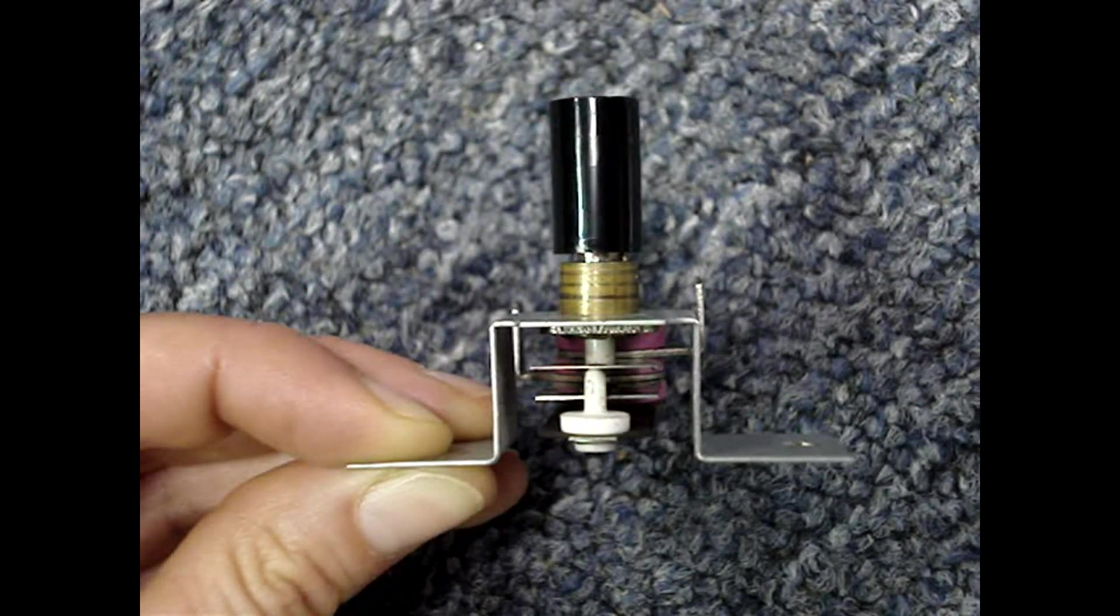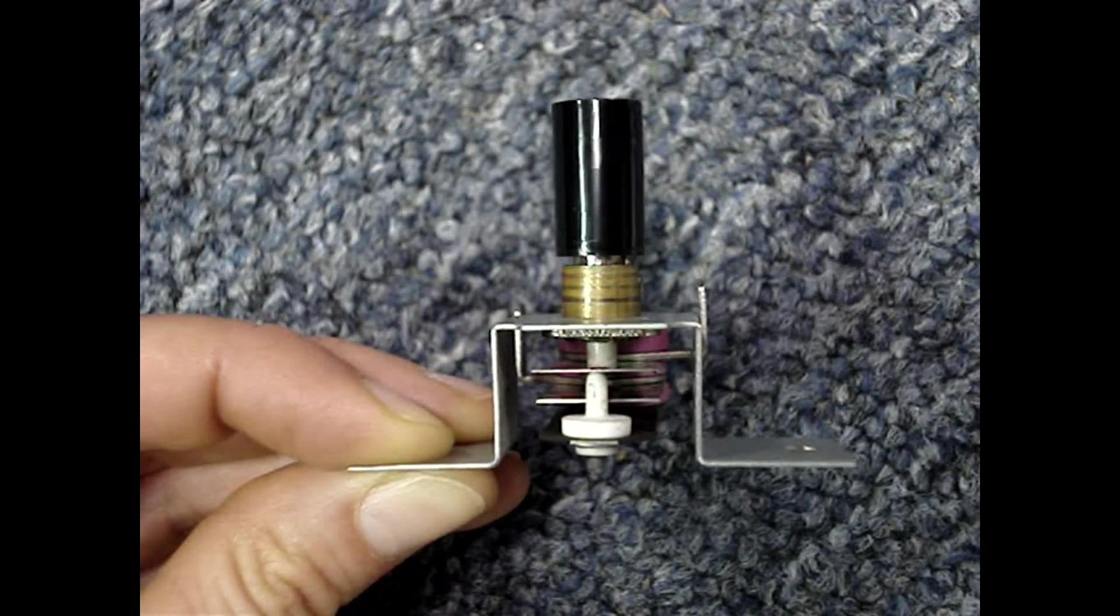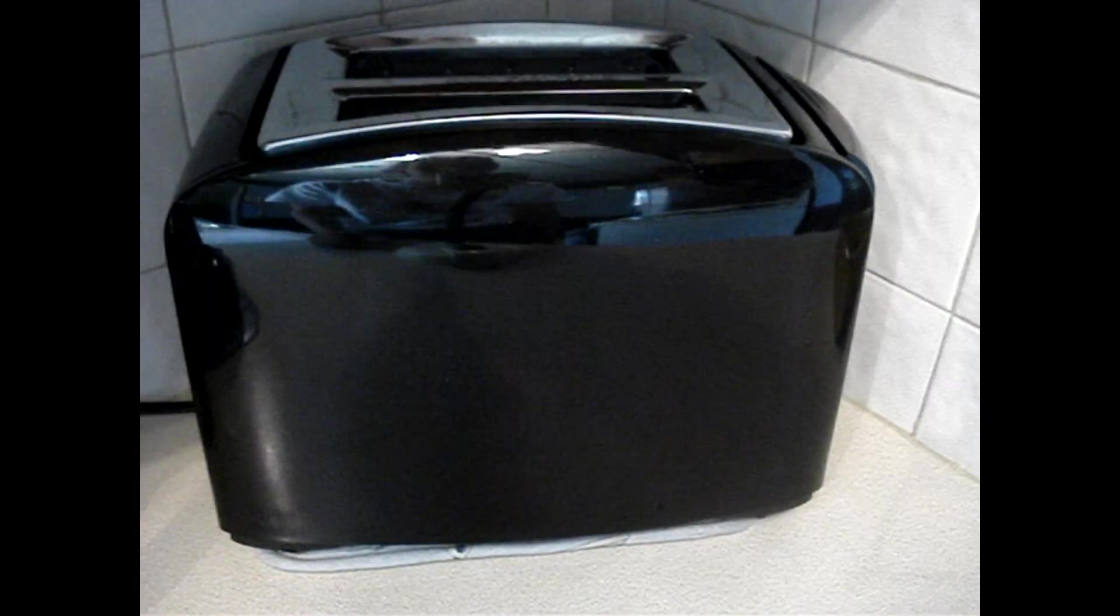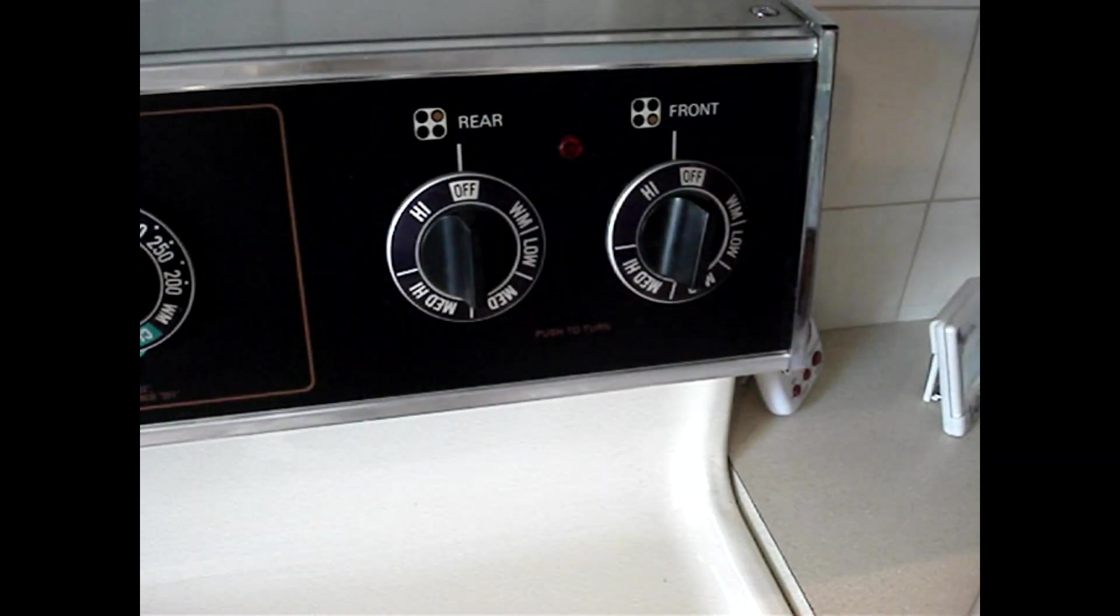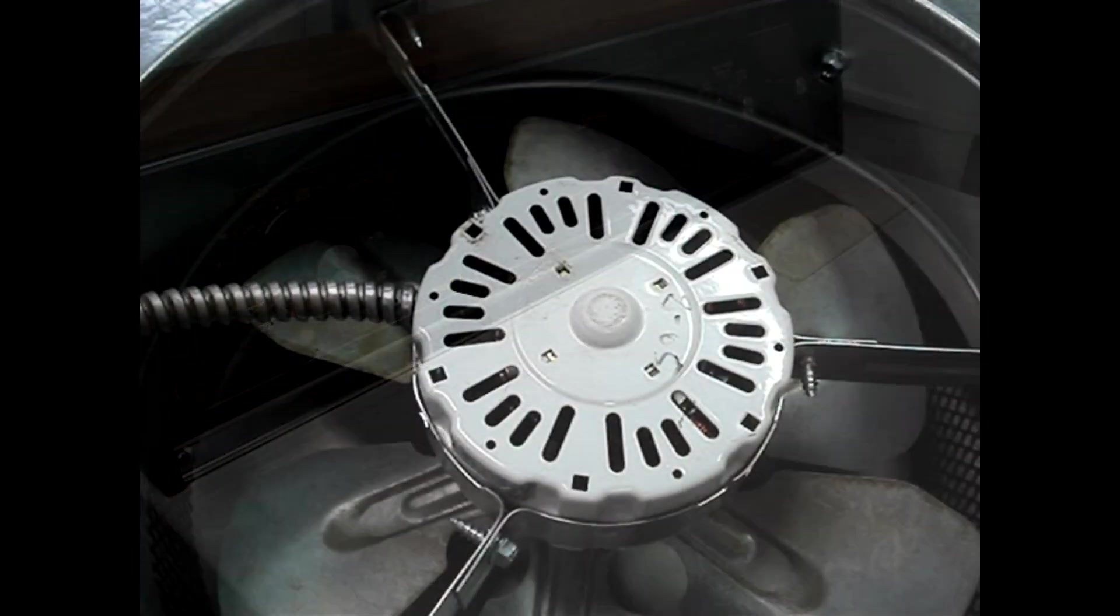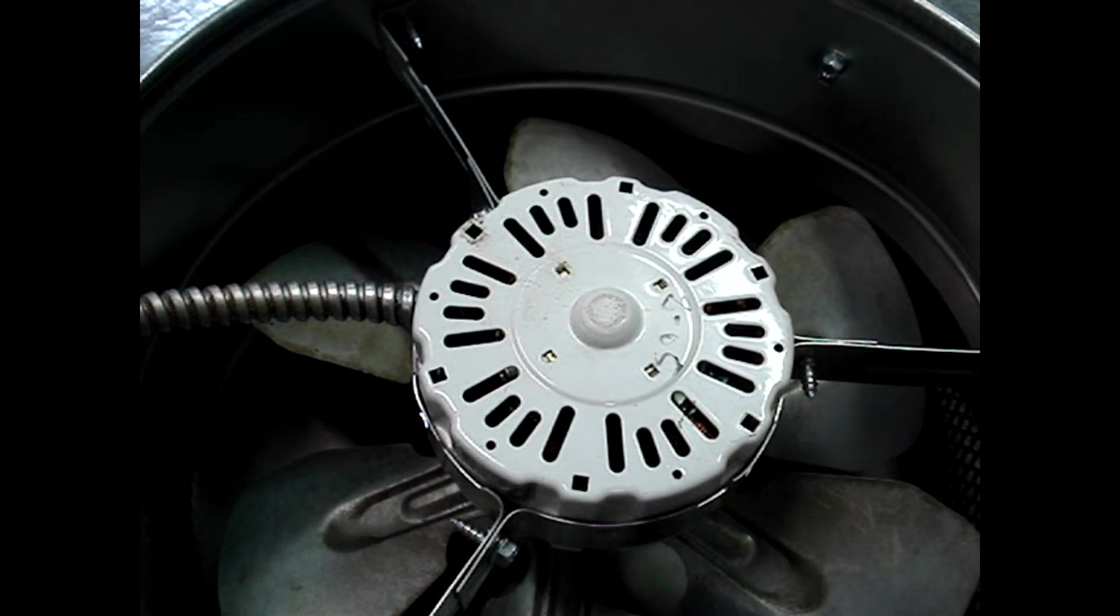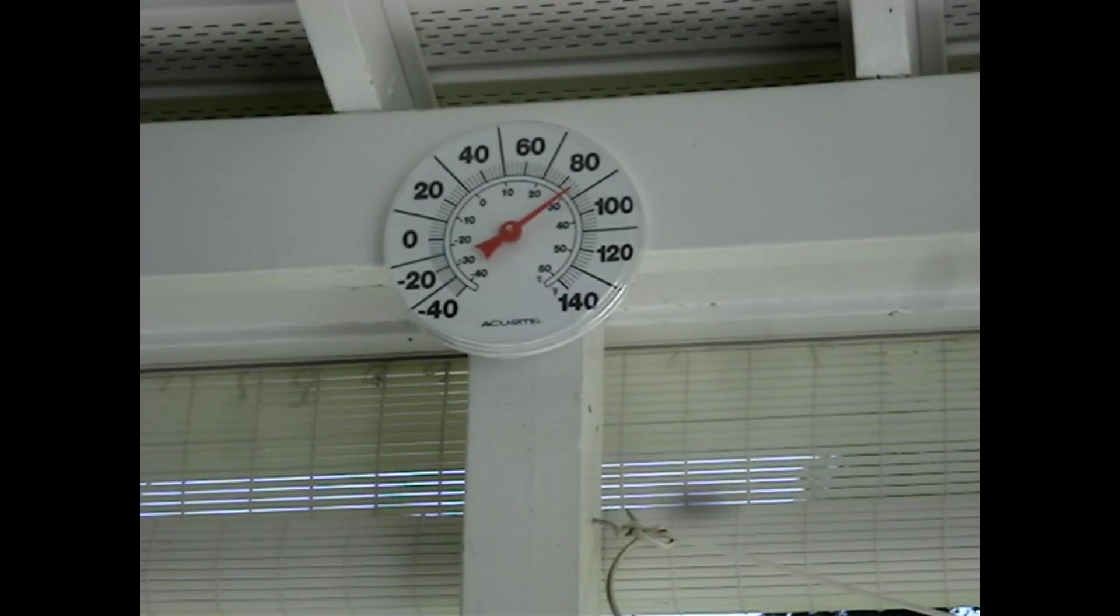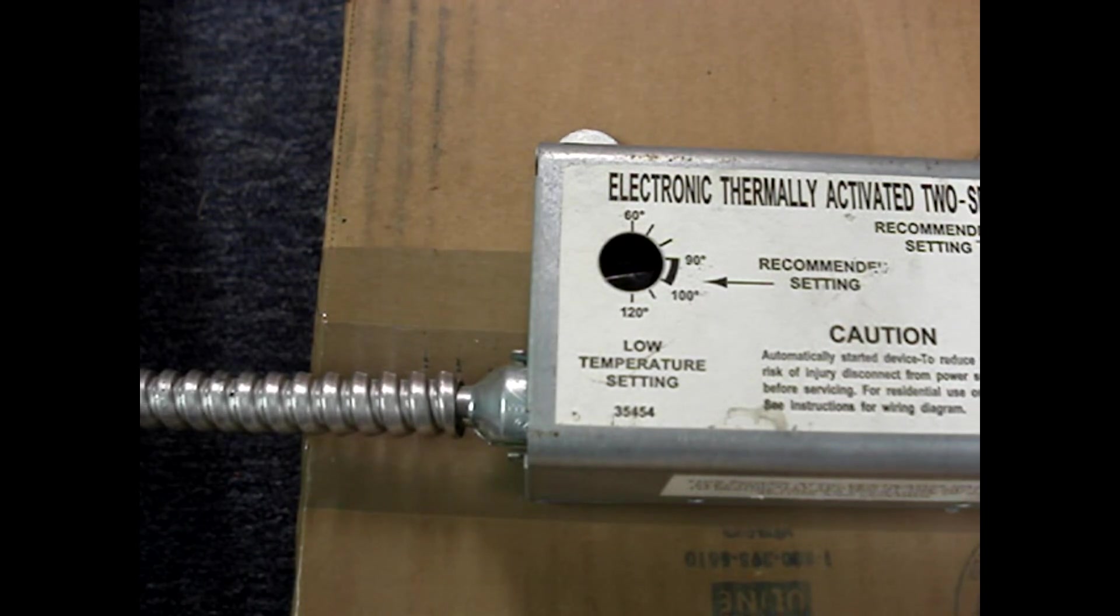Bi-metal switches are found many places. They may not look exactly like this one, but they work on the same concept. They regulate when the toast is done and the temperature on the stove. If a dryer or a motor gets too hot, they shut it down and they can measure the temperature too.